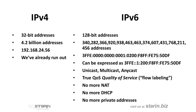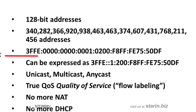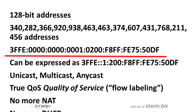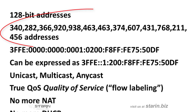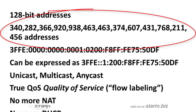IPv6, on the other hand, uses 128-bit addresses like this. Eight groups of four hexadecimal numbers, which gives you 1,024 times more addresses to assign to devices. This comes out to 340 trillion trillion trillion IP addresses — let's just call it a gazillion to keep it simple.